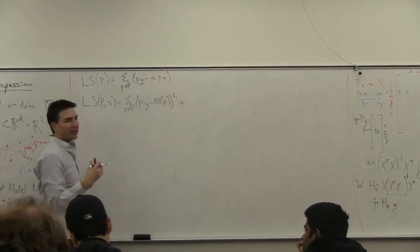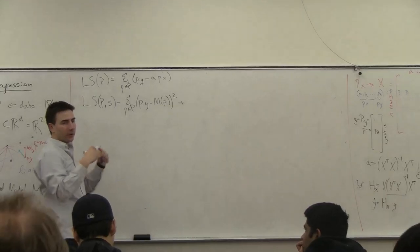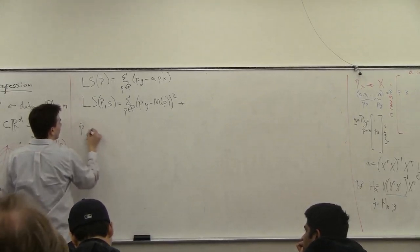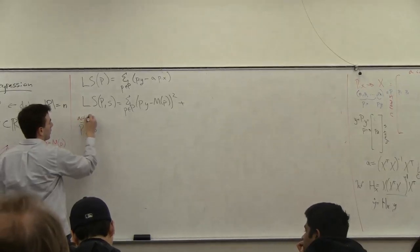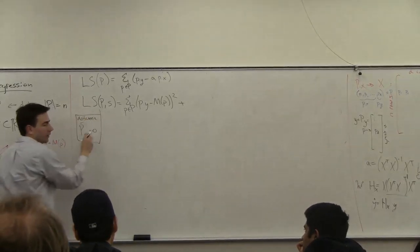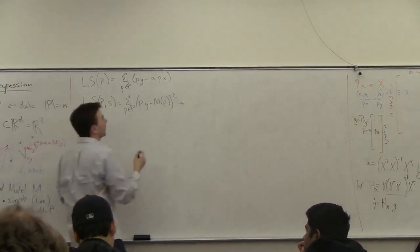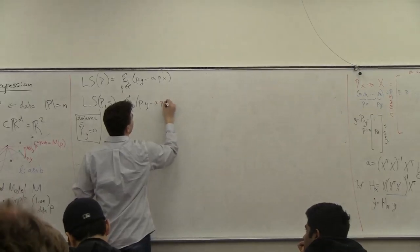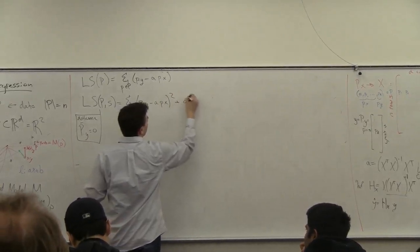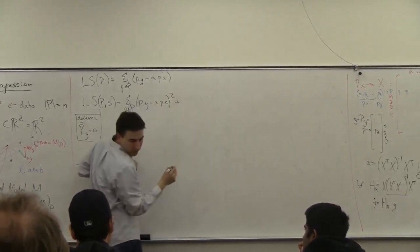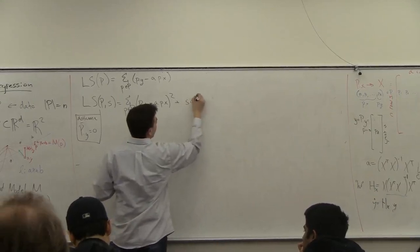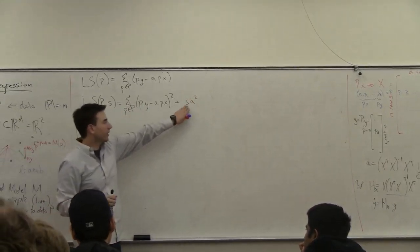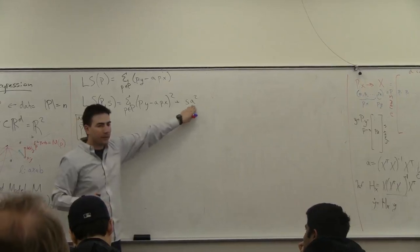Assume that these things have been centered, so the y coordinates — assume that the mean of p.y equals zero — so I don't have to worry about the shift term or the extra b term. Then this is going to be a times p.x squared plus s times a squared. So my cost function now has this extra parameter s times the slope squared.